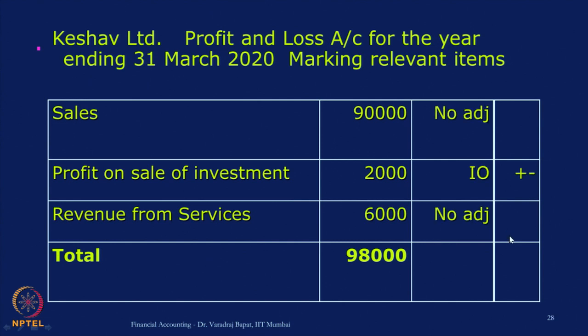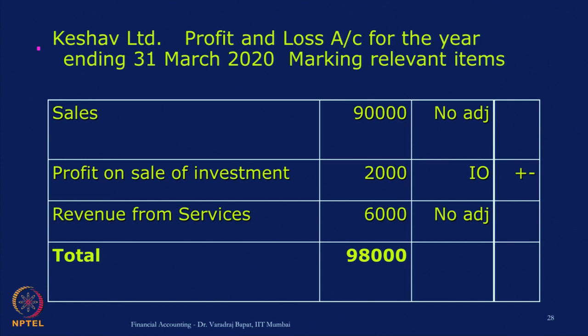Now for P&L: items like sales or revenue from services are not to be shown in cash flow, so I have written here as no adjustment — no item of cash flow. For items like profit on sale of investment, there will be two adjustments. This is related to investment, so it is I plus, as money is coming in. But it has a second effect in O — because it is already added in P&L, we want to remove it from P&L. It is not a regular day-to-day activity, so we will reduce it from O. That is why I have marked it as O minus and I plus.